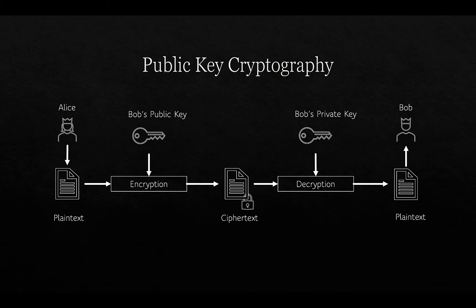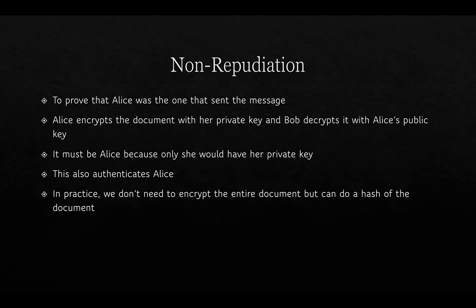A private key is exactly that — private — and it's not shared with anybody, so it's only the owner that possesses the private key. To prove that Alice was the one that sent the message, Alice encrypts the document with her private key and Bob decrypts it with Alice's public key. Only Alice could have done this because she's the one who has her private key, so this also authenticates Alice.